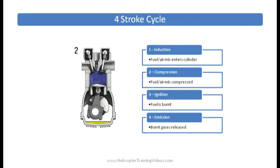In the R22 we have a Lycoming four-cylinder, so we have four of these cylinders and they're horizontally opposed which means they're laid out flat, two on each side.